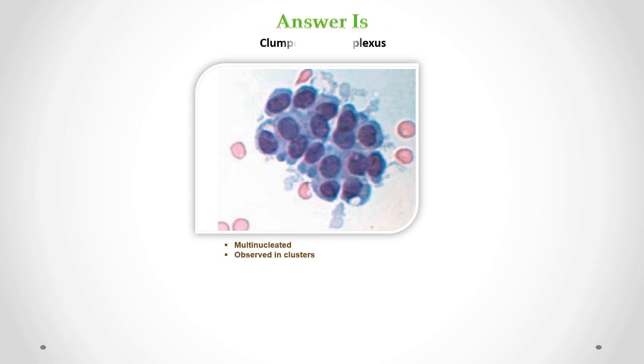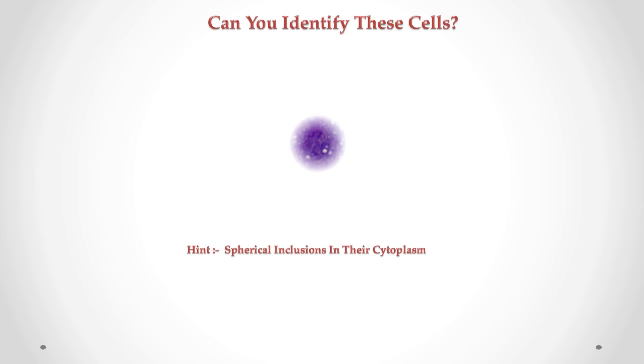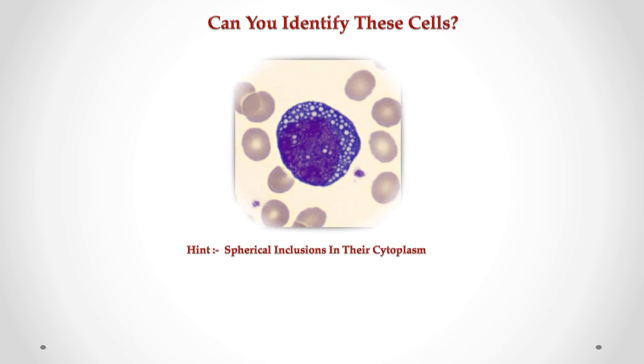Correct answer is clumped choroid plexus. We can see multinucleated cells observed in clusters. Can you identify these cells in CSF?